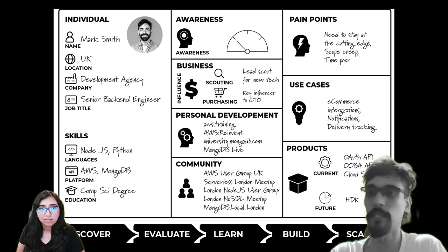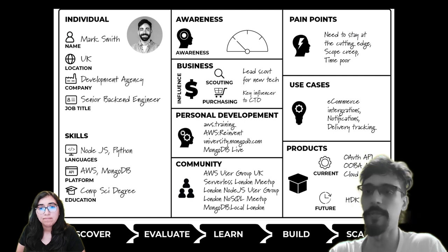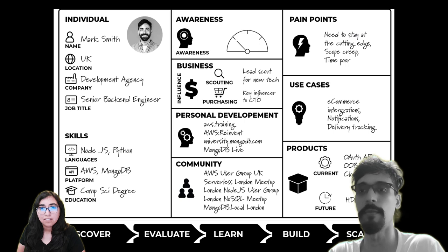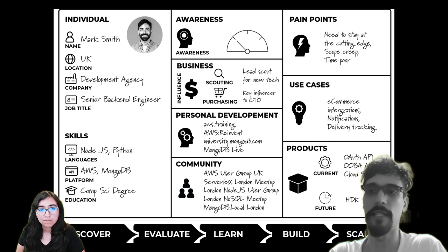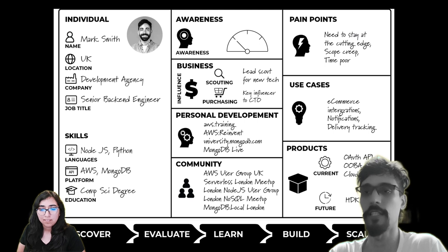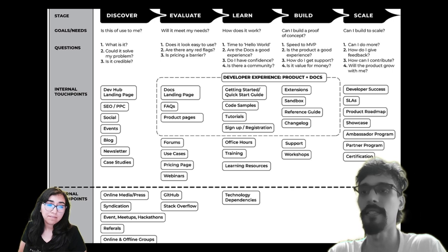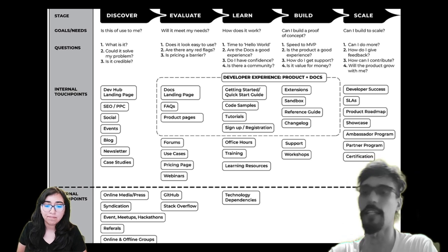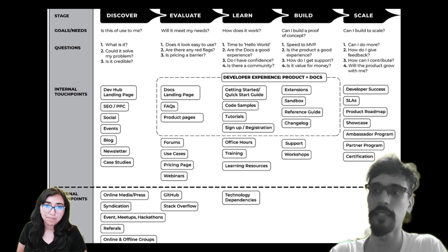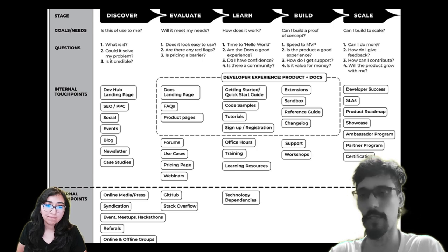Here we see an example of a developer persona — all the details about a fictitious developer who represents a particular segment of developers deemed important. At the bottom, you'll see: discover, evaluate, learn, build, scale. This is where you start designing the developer journey for this particular persona, which segues into the developer journey map. For each persona, the second step is to map out the details of each stage of the developer journey by answering the questions at the top and using those to identify internal and external touch points at the bottom.